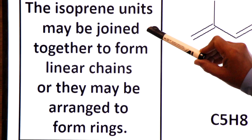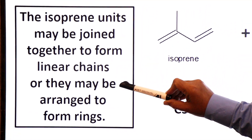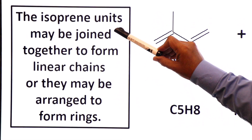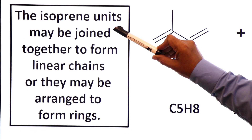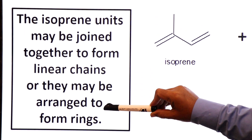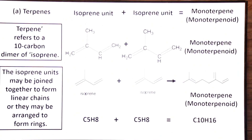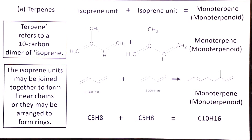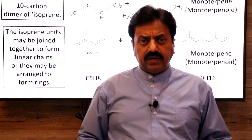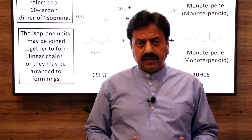The isoprene units may be joined to form linear chains, or they may be arranged to form rings. These isoprene units link and join with each other, forming either linear chains or ring structures. So on this slide, we defined terpenoids as a dimer built from two isoprenoid units. Now we move to the classification of terpenoids.